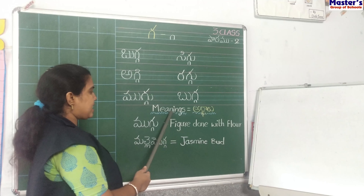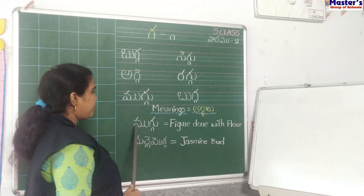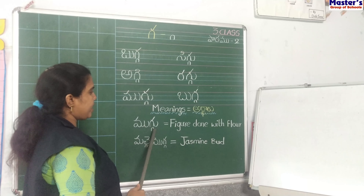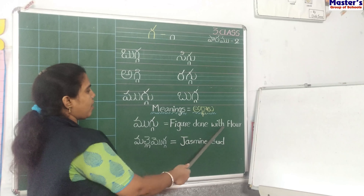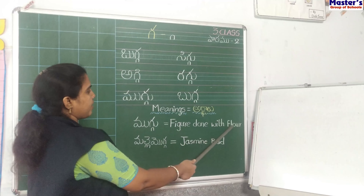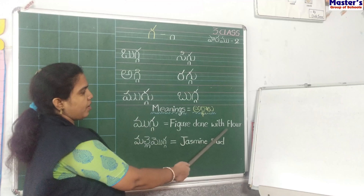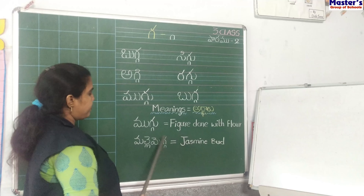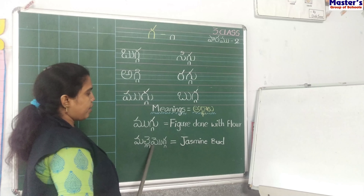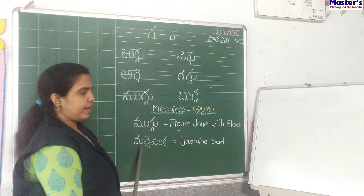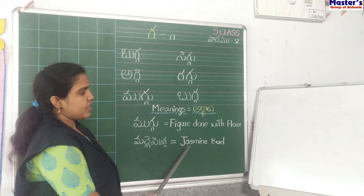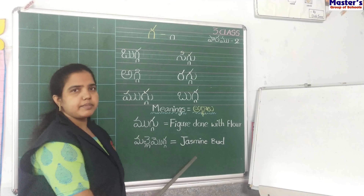Meanings. Muggu. Muggu means figure done with floor. Muggu means figure done with floor. Malle Mugga. Jasmine bird. Malle Mugga. Jasmine bird.